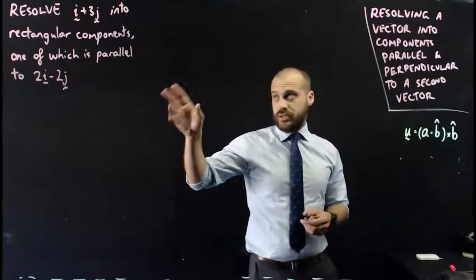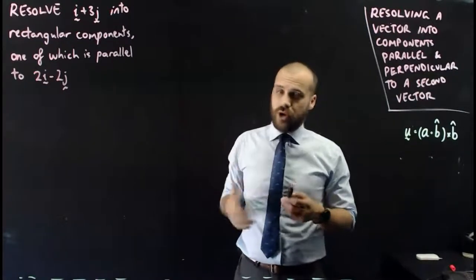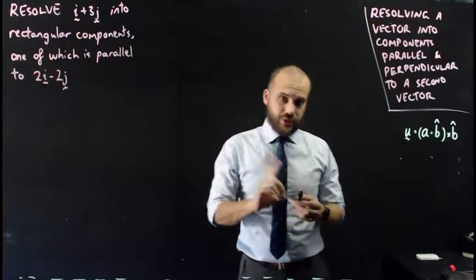Here's the sort of question we're going to answer. Resolve i plus 3j into rectangular components, one of which is parallel to 2i minus 2j.